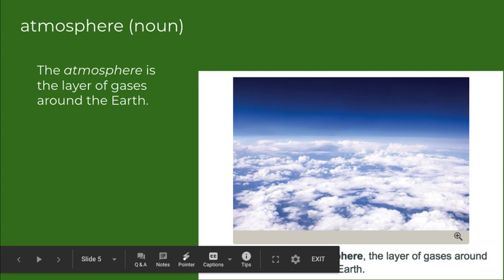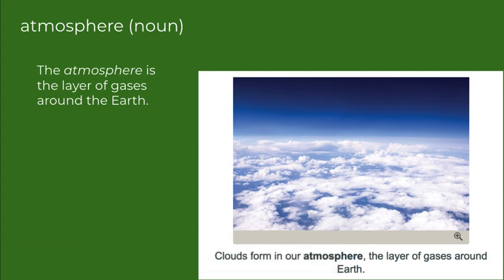The first word is atmosphere. It's a noun. The atmosphere is a layer of gases around the earth. We've kind of talked about this a little bit in science. Clouds form in our atmosphere, and that is, again, the layer of gases around the earth.